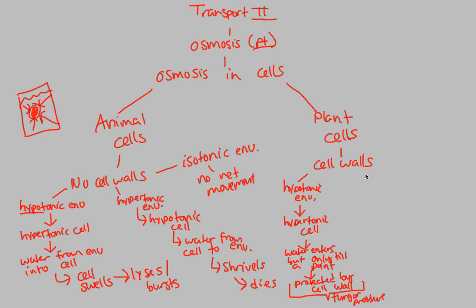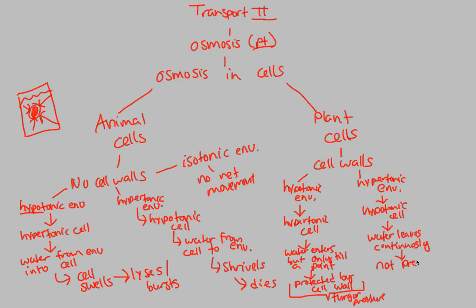The opposite situation is very interesting as well. If we put a plant cell — which has a cell wall — into a hypertonic environment with lots of solute, we're going to have a hypotonic cell. What's going to actually happen is that the water leaves continuously. There's no stopping the water from leaving. The cell wall can prevent water from over-entering in a hypotonic environment, but in a hypertonic environment the water leaves continuously because it's not prevented by the cell wall. Entering can be prevented, but leaving is not.